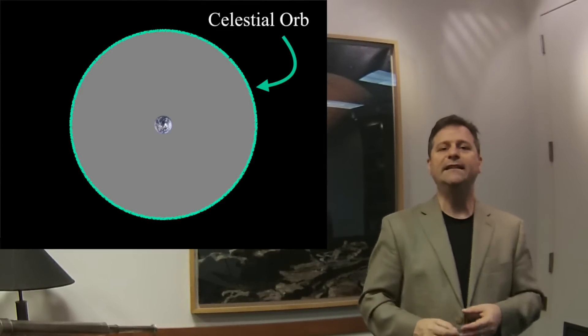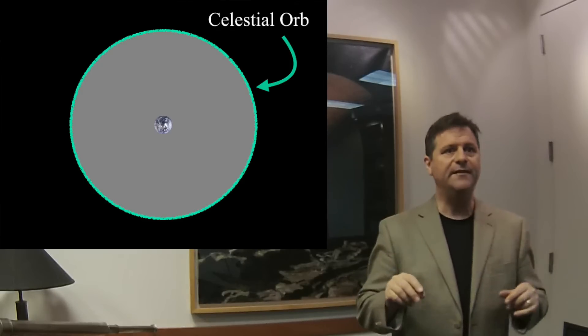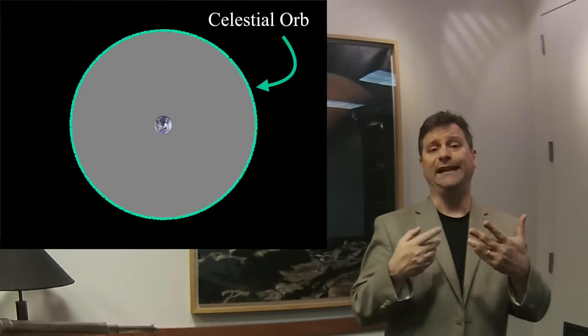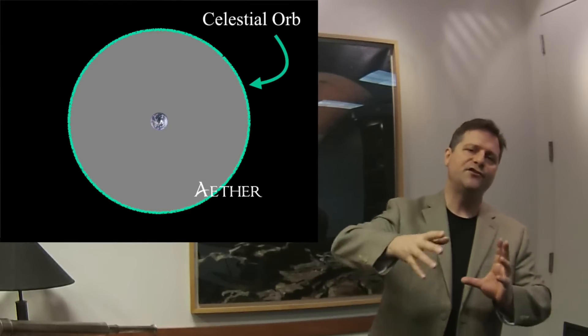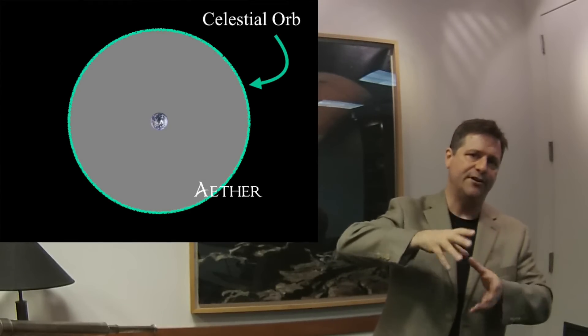So what did he do? He posited that the earth is at the center. And in order to see both the prograde motion and the retrograde motion of the planets, here's what he posited must occur.